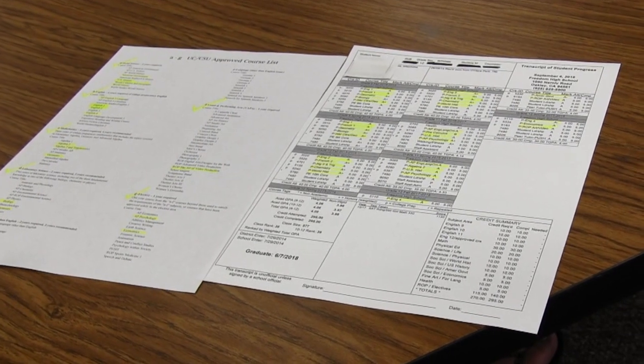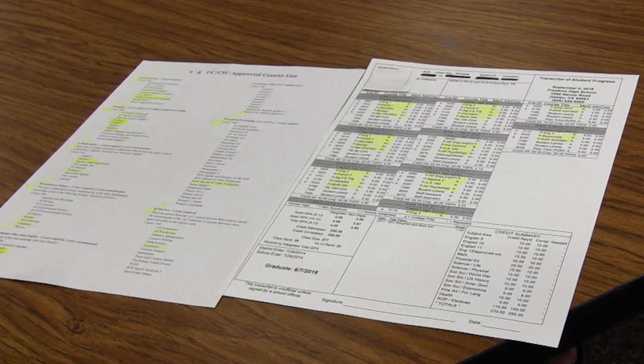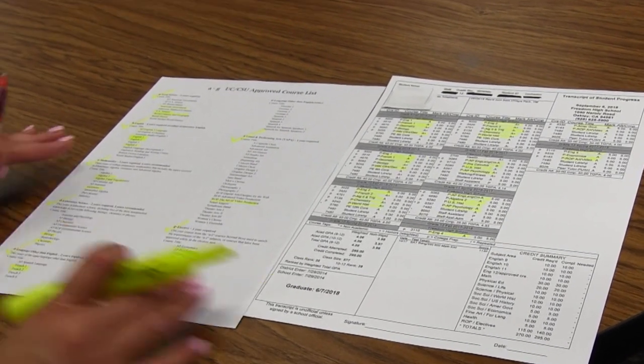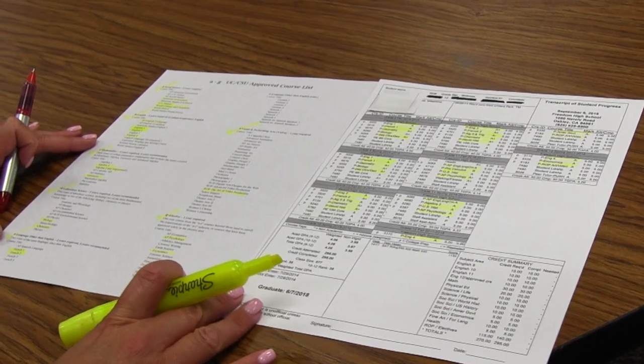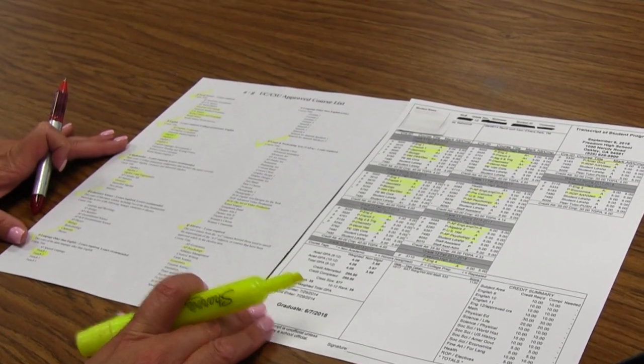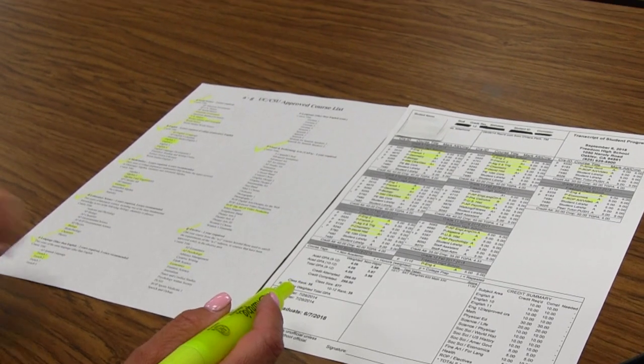All set for that A through G requirement for college admission. Your high school graduation requirements are similar. You always want to keep that in mind that you're on the right track for high school graduation and college admission process.